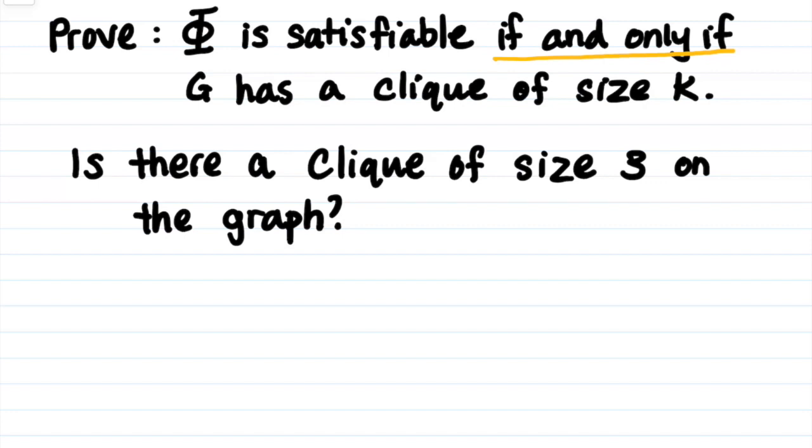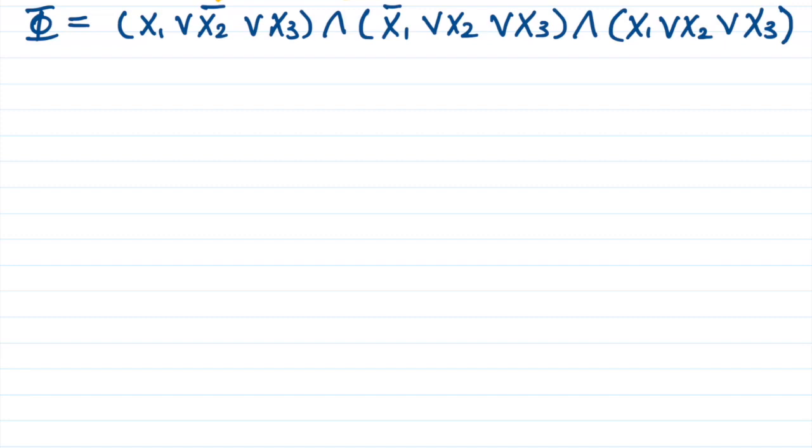Before I give the formal proof, I would like to build some intuition for this proof by highlighting some interesting features and properties of the construction of this new graph. If we look at phi, we can see that the clauses are connected by the AND symbol. And this means that in order for the formula to produce a 1, all of the clauses must evaluate to 1.